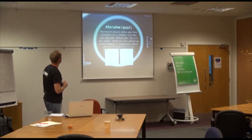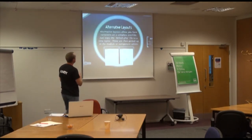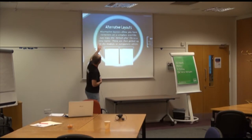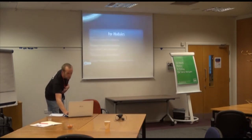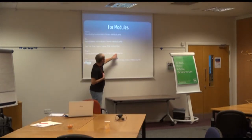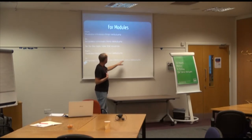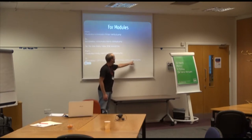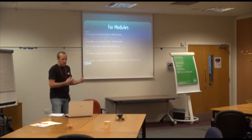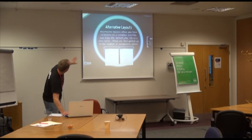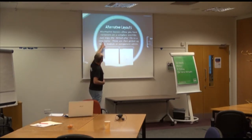We'll move on to some examples. To use alternative layouts: you take the default view — in this instance, you're modifying the default view of the menu module. Instead of calling it default, you call it red.php, for example, and then give it a new name. That's picked up automatically. This has been available since Joomla 1.5, not just Joomla 3.